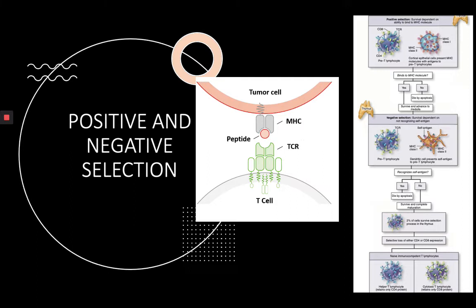Why is that important? If a T cell binds on an MHC complex which presents a self-antigen, then the T cell understands that this is its own cell and will not attack it. But if a T cell binds on an MHC protein which presents a foreign antigen or an antigen from a tumor cell, then the T cell recognizes that this cell is unhealthy or foreign, and it will start an immune response and eliminate the pathogen or tumor cell.